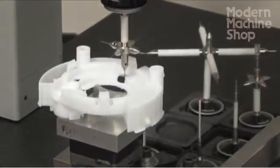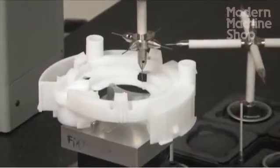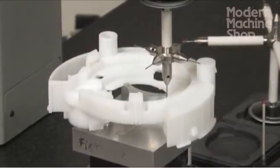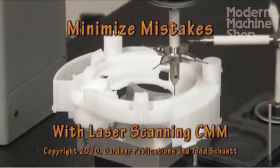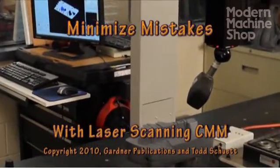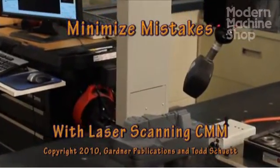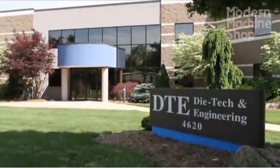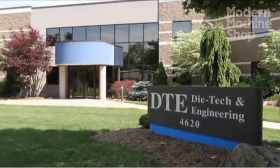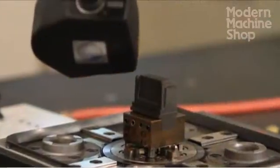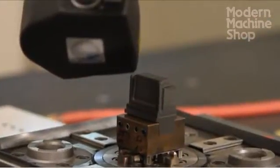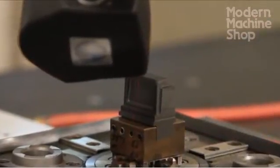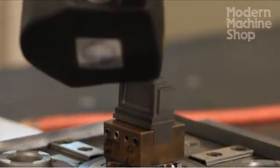Traditionally, inspection with a CMM is often performed only at the completion of an assembly or machining process. One mold maker has a different way. At Dye Tech and Engineering near Grand Rapids, Michigan, inspecting electrodes or components during the mold build process helps prevent surprises and big problems at final inspection.